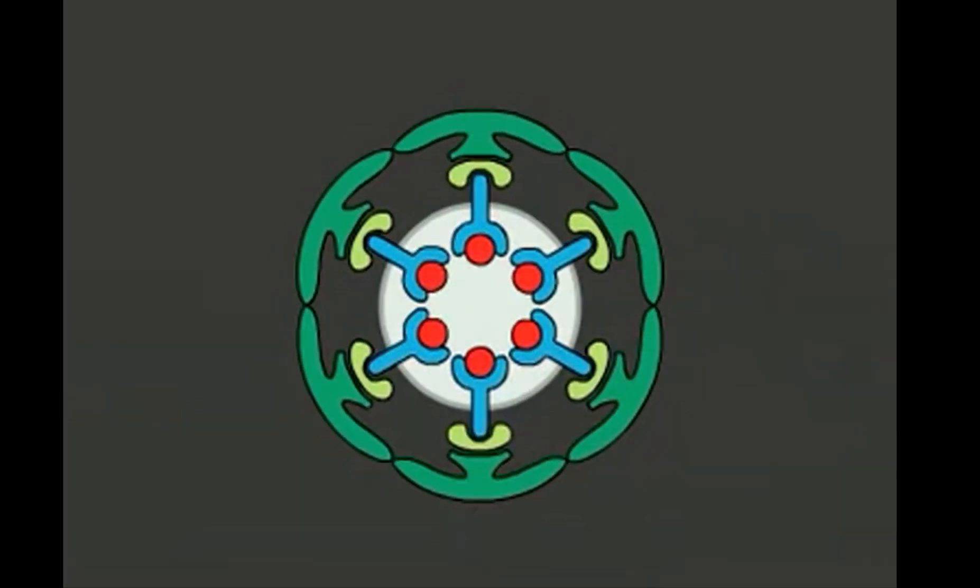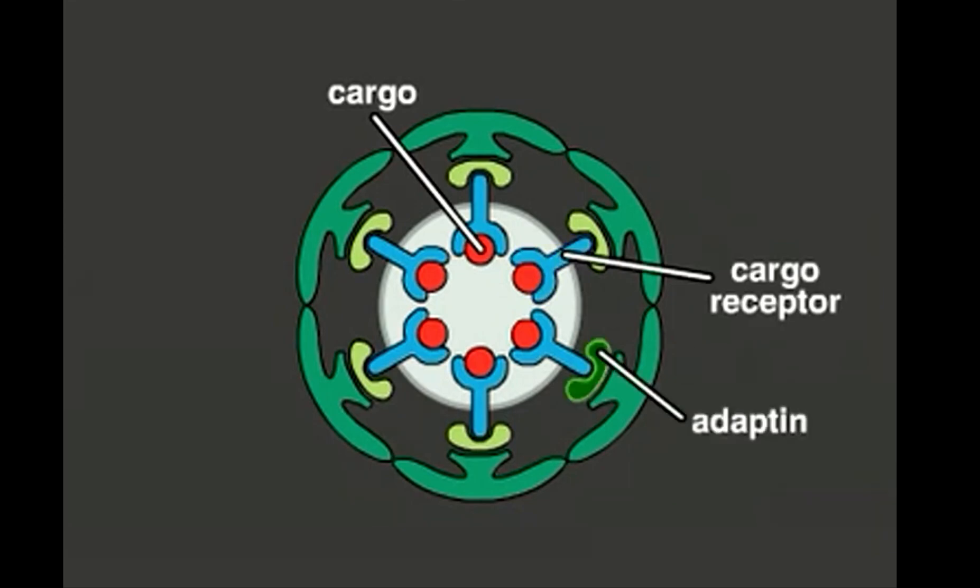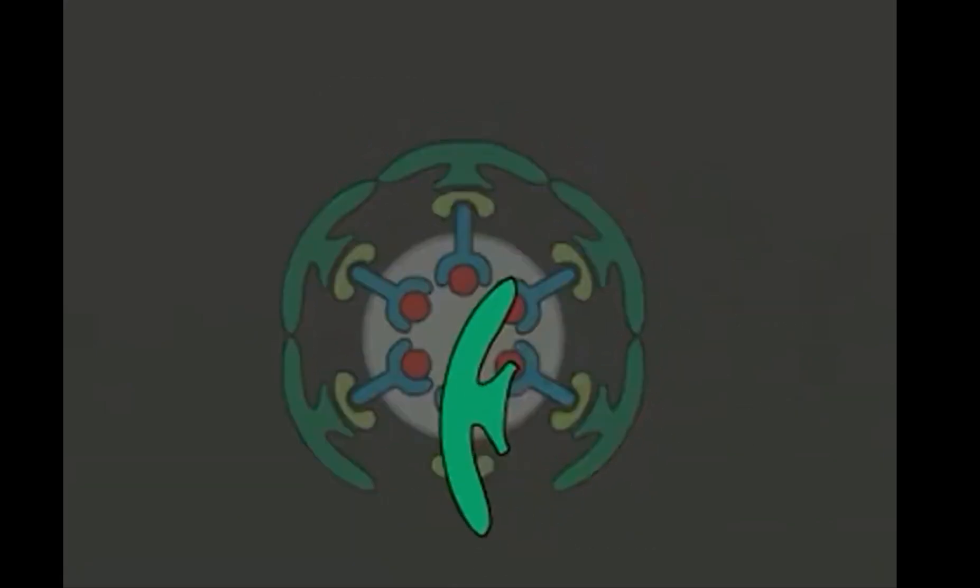The process involves a variety of molecules, including the cargo molecules that the cell takes in, the receptors that capture the cargo molecules, and molecules called adaptins that mediate contact between the receptors and the clathrin molecules that act to shape the vesicle forming of the plasma membrane.